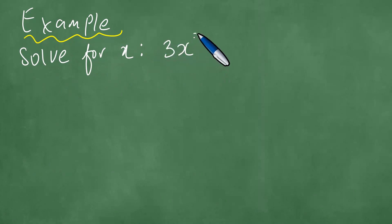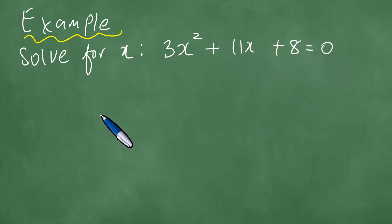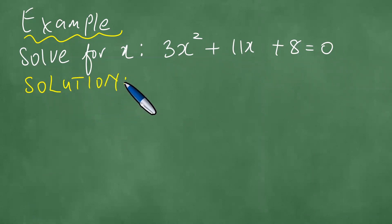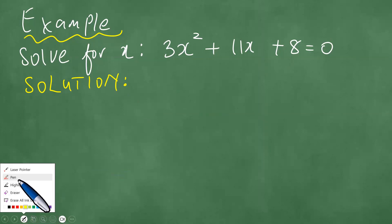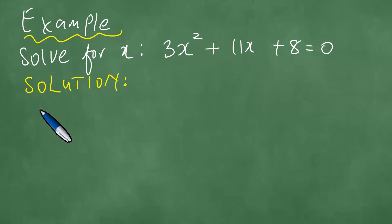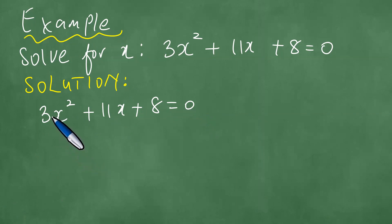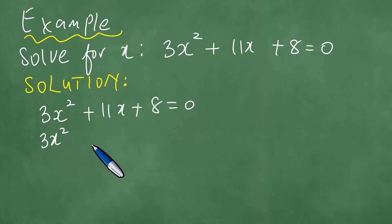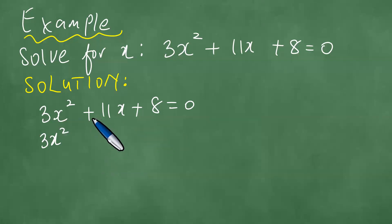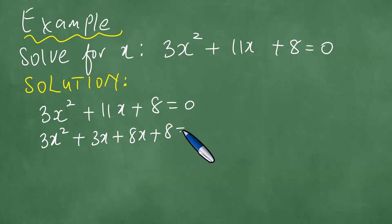Given 3x squared plus 11x plus 8 equals 0. First things first, we are going to use the standard procedure. We multiply 3 by 8 to get 24, so we need two terms whose product is 24x squared and whose sum is 11x — exactly 3x plus 8x — giving 3x plus 8x plus 8 equals 0.